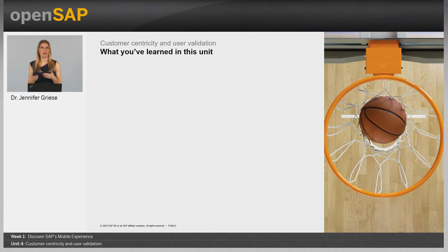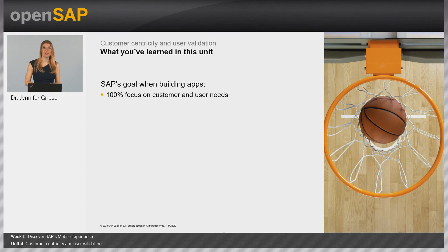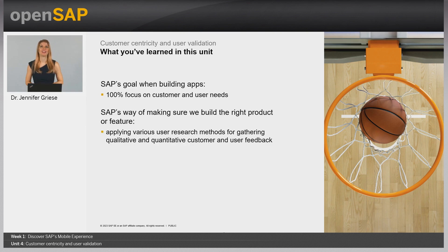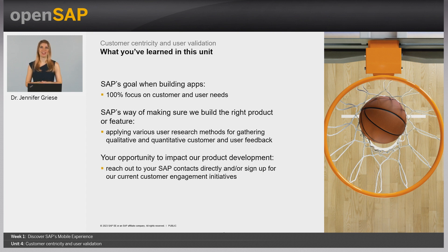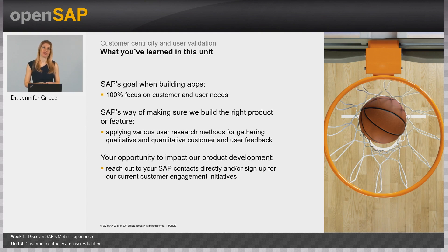This concludes Week 1, Unit 4 on customer centricity and user validation. Here's what we've learned: it is SAP's goal to have 100% focus on our customers and users' needs. To make sure we build the right product or feature, we apply a diverse set of user research methods to gather both qualitative and quantitative feedback. Here's the key takeaway: please make sure to use your opportunity to impact our product development. Simply reach out to your SAP contacts or sign up directly to our current customer engagement initiatives at influence.sap.com. We'd love to welcome you there.